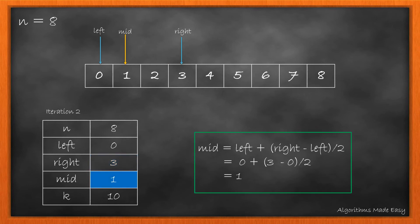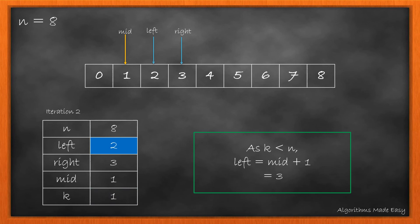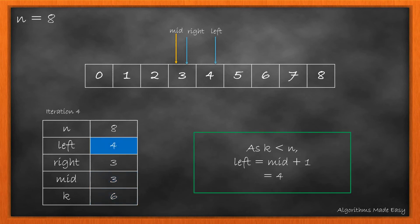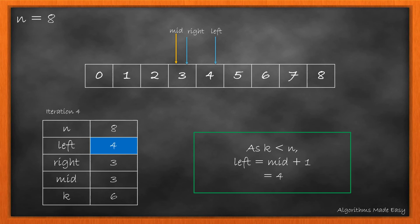Now, we will find mid and k. As k is less than n, we shift left to mid plus 1 and calculate mid and k. We repeat this process as k remains less than n, shifting left to mid plus 1 each time.